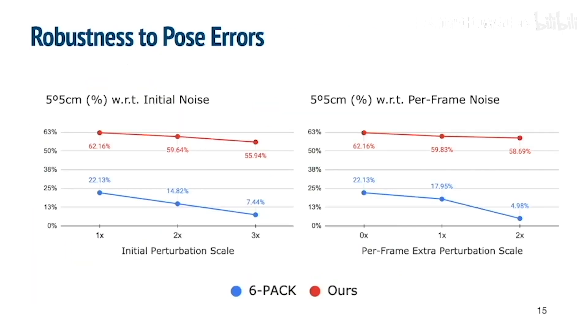Regarding tracking robustness, on the left, we plot 5-degree 5-centimeter accuracy with respect to the amount of initial pose errors. On the right, we plot the accuracy with respect to pose noises added to every frame during tracking. Our method is significantly more robust to noises than 6-pack.